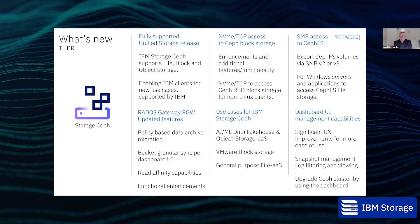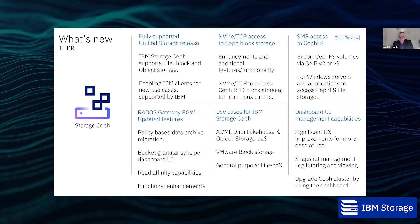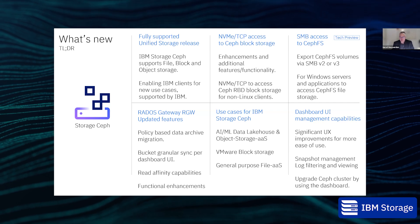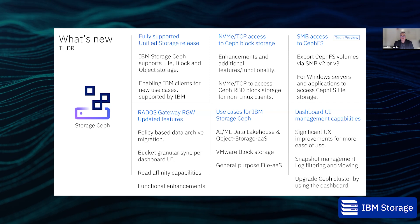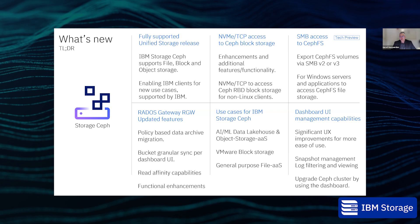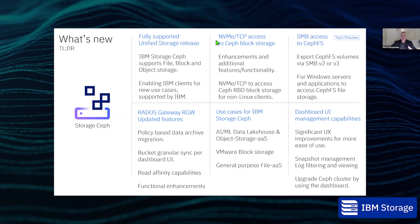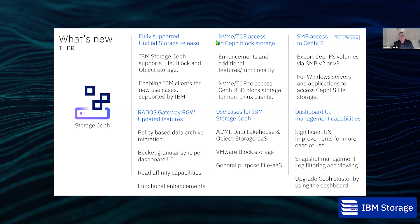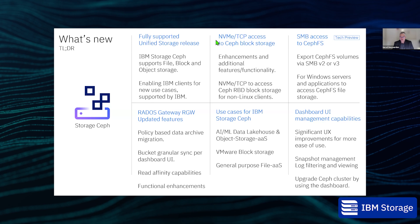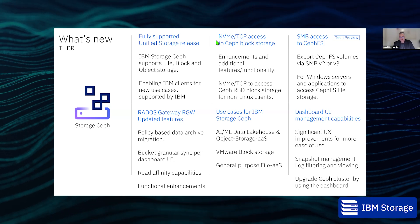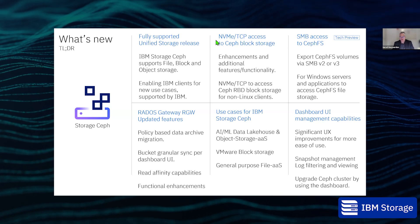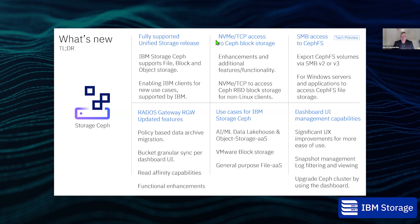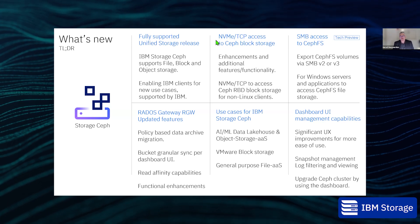The key use cases where IBM Storage Ceph shines include: AI/ML data lakehouses for analytics data; object storage as a service — offering on-premises object storage in your own data center with replication across multiple locations; block storage with the vSphere plugin integration; and now general purpose file as a service. We already had this for Linux and NFS systems, and with the addition of SMB for Windows file sharing becoming generally available soon, the file use case is now much broader.